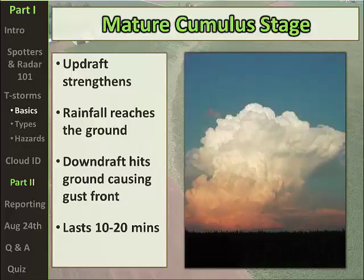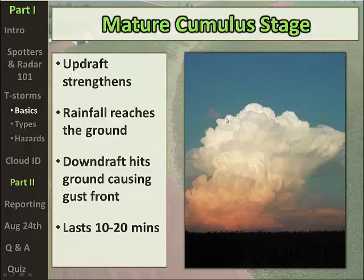If you were looking at this storm from a distance during the mature cumulus stage, you'd see it is much more vertically developed with very sharp edges to the cloud tops — indicative of a lot of liquid supercooled water and ice in the storm. Looking at the base of the cloud, you can see evidence that precipitation is falling from the base.